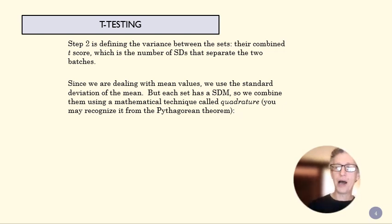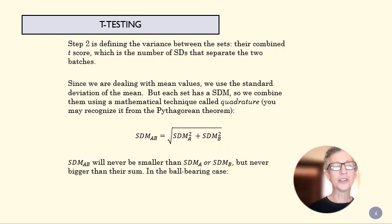The second point is because we have two data sets, we have two standard deviations of the mean. And so we're going to combine those in a process called quadrature. And you've seen this when you've looked at the Pythagorean theorem, for instance. We square one number and sum it with the square of another number and take the square root. What does this do mathematically? Well, it means that our combined standard deviation will always be bigger than each of these individually, but it will never be bigger than the sum of the two of them.